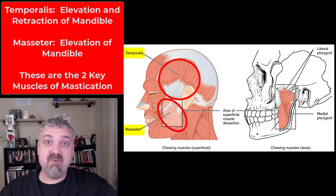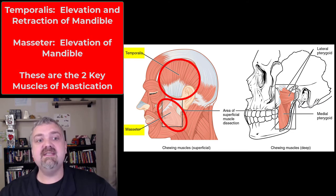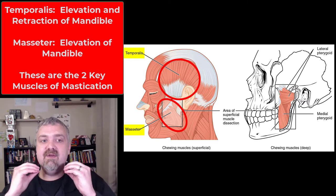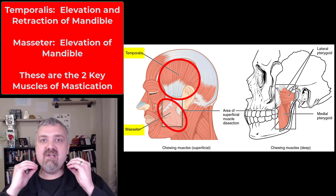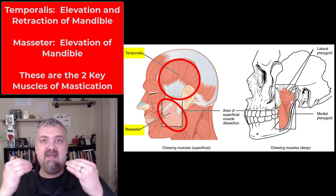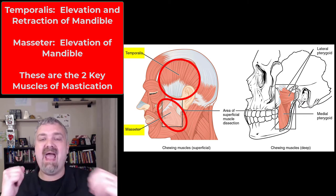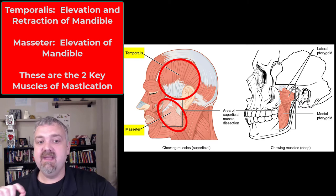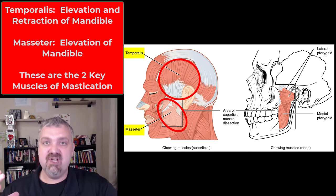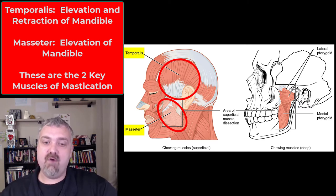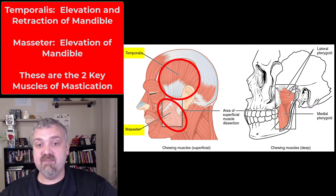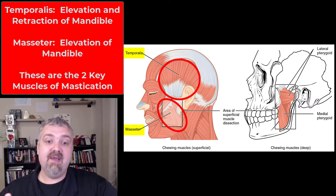The temporalis's primary function is to elevate the mandible. It also plays a role in retraction of the mandible — bringing the mandible back a little bit. The masseter really just elevates the mandible, and it's extremely powerful — pound for pound, one of the strongest muscles in your body.